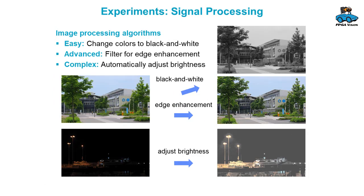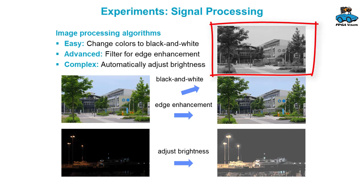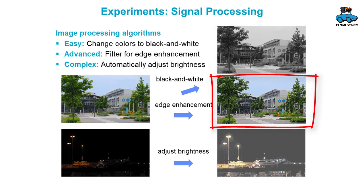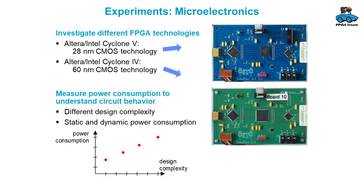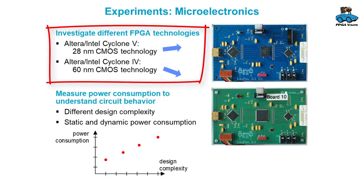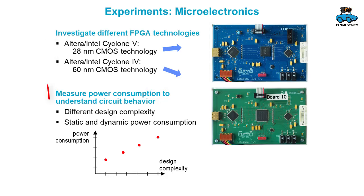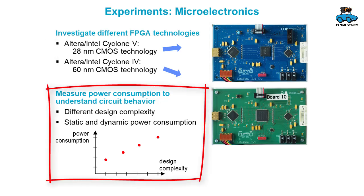You can do experiments on signal processing with different complexities — you can change colors to black and white, make edge enhancement with a filter or a more complex algorithm, and automatically adjust the brightness of images. There are also experiments for microelectronics: you can implement an FPGA design on different technologies. We have the Altera Intel Cyclone 5 and Cyclone 4, and you can measure power consumption for different design complexities to understand circuit behavior.